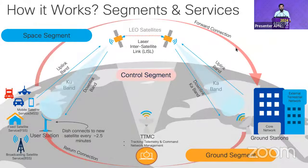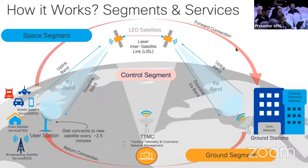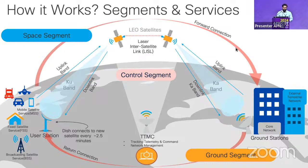There are three main components: the user station near the user, the control segment, the space segment, and the ground station. A request from the user goes to the satellite via the user station, the satellite reflects it or uses laser inter-satellite links to another satellite, then it lands at the nearest ground station and goes to the core network.